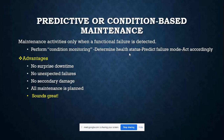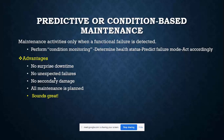The advantages of predictive maintenance are significant. First, there is no surprise downtime — you know the condition of every machine in the plant so you don't need to stop unexpectedly. Second, there are no unexpected failures, no secondary damage, and all maintenance is planned. This sounds great — so why don't all companies adopt this maintenance practice?